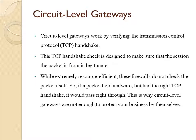Circuit level gateway is another simple firewall type meant to quickly and easily approve or deny traffic without consuming significant computing resources. Circuit level gateways work by verifying the TCP handshake. This TCP handshake check is designed to make sure that the session the packet is from is legitimate. While extremely resource-efficient, this firewall does not check the packet itself. So if a packet held malware but had the right TCP handshake, it could pass right through. This is why circuit level gateways are not enough to protect your business by themselves.